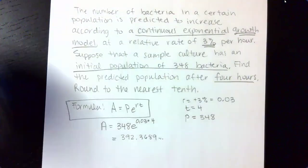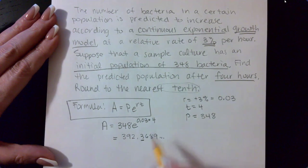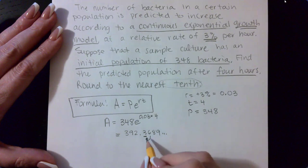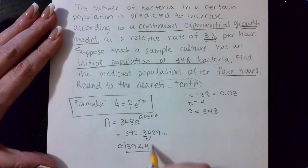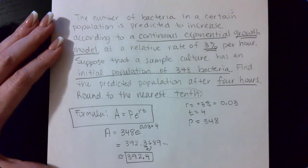It does say to round to the nearest tenth. So I am going to take this decimal place here and look at the one to the right to decide what happens to that spot that's underlined. This will actually round to 392.4 since 6 is 5 or more. That is an example of this problem.